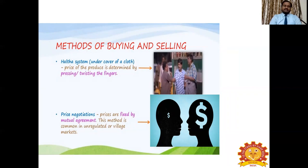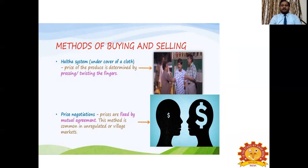There are different methods of buying and selling. The first is the Halta system, famous in Tamil Nadu and across all regions of the country. It is generally called the 'under cover of a cloth' method. The buyer and seller place their hands under a cloth and do negotiations by pressing or twisting fingers. For example, if they twist two fingers, it may be treated as 2000; the buyer may then go to a third finger expecting 3000 to be paid. They negotiate and come to a settlement of either 2000 or 3000 at the end. The next method is price negotiation, where prices are fixed by mutual agreement — common in unregulated or village markets, where buyer and seller face each other.